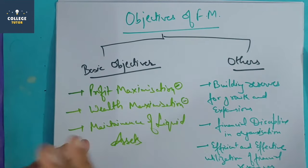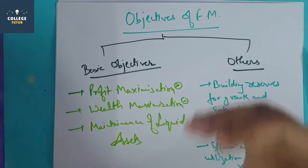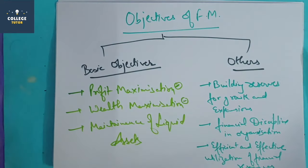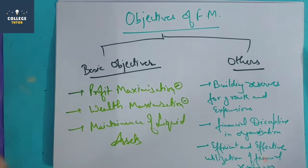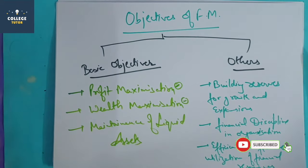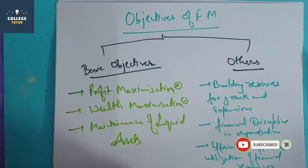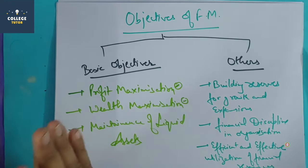In today's video, we have seen the scope, functions, and objectives of financial management. In the next video, we will talk about profit maximization versus wealth maximization, and also the time value of money, which will complete the first unit. If you have any doubts, please comment. If you have not subscribed, please do subscribe — we are also coming out with an app soon. Thank you.